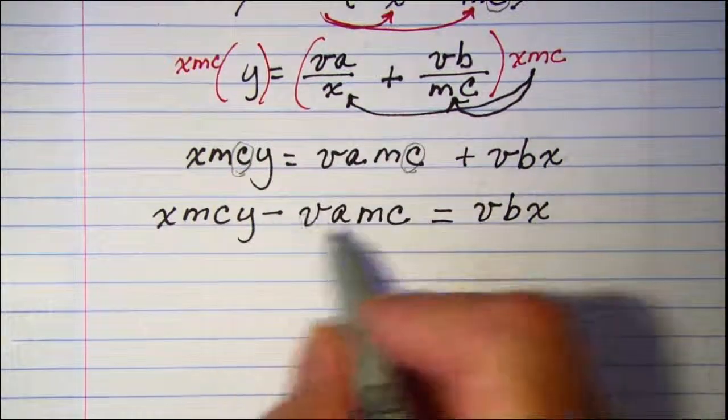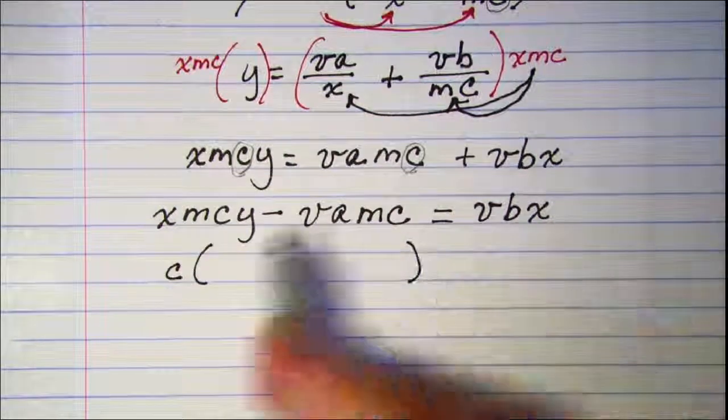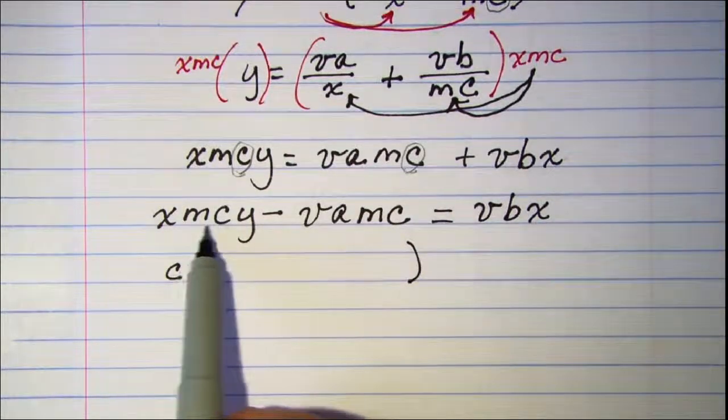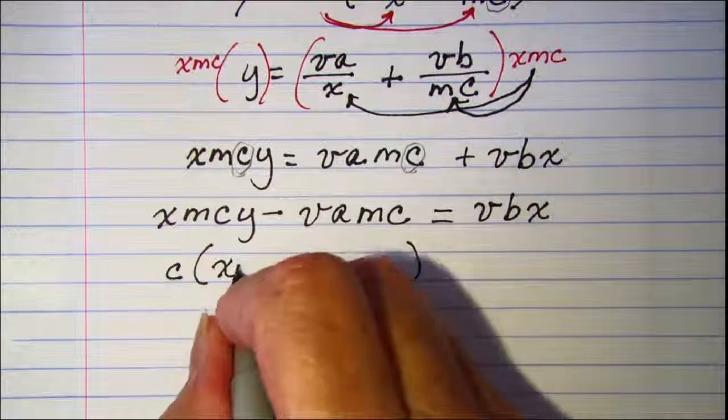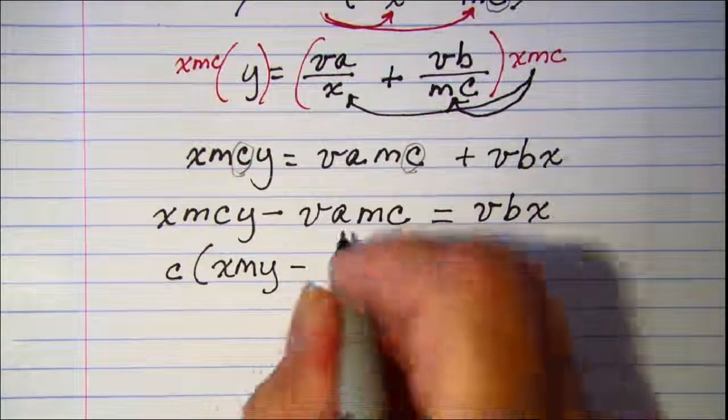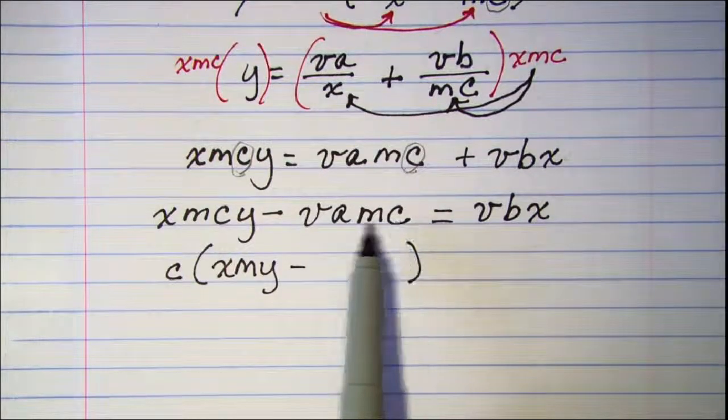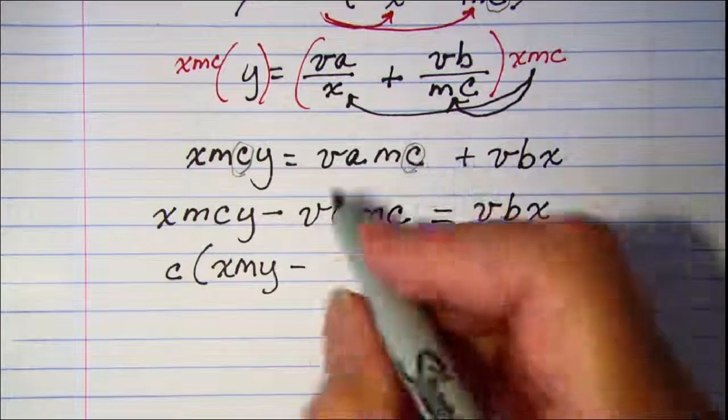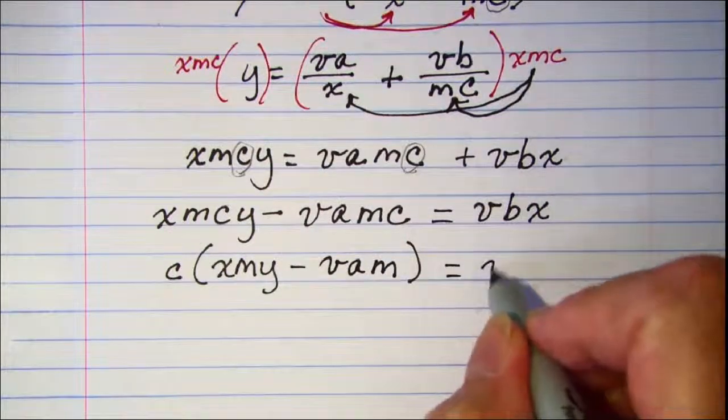Since I'm solving for c, let's factor c out of that expression. When I factor c out of this term I have xmy. When I factor c out of the other term I have vam, and the right side stays vbx.